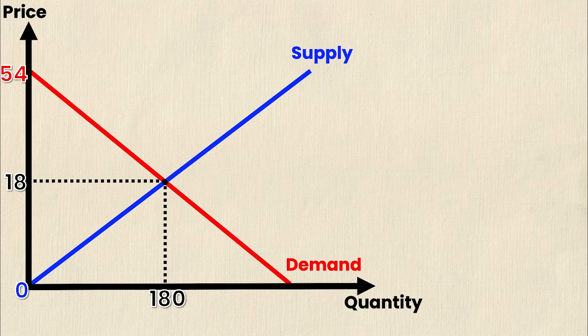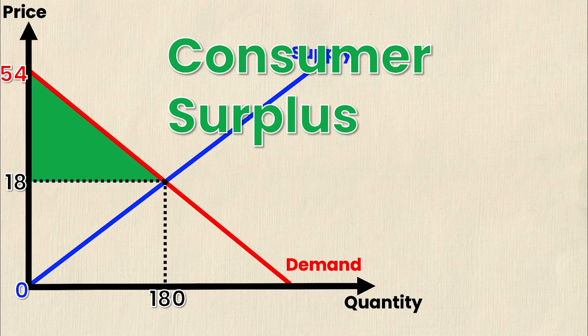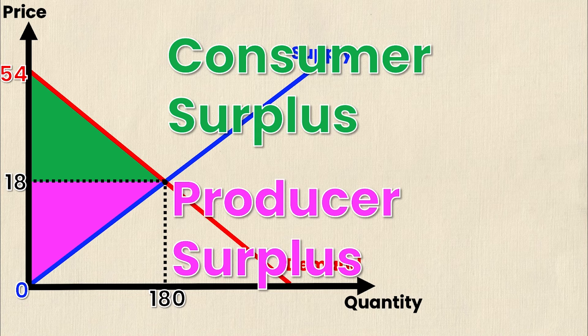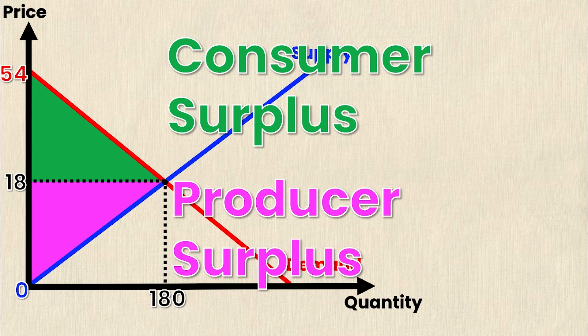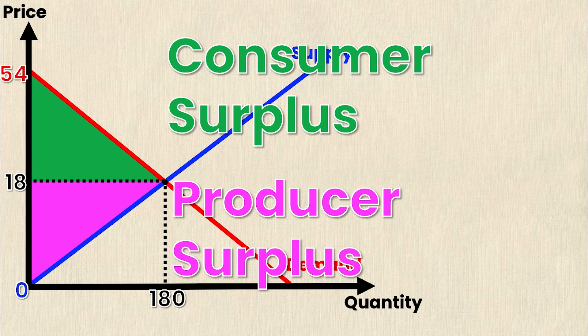So remember consumer surplus is the area below the demand curve and above the market price and producer surplus is the area above the supply curve and below the market price. So all I need to do is calculate the area of these two triangles. So let me center out this graph in the middle and we'll start solving.